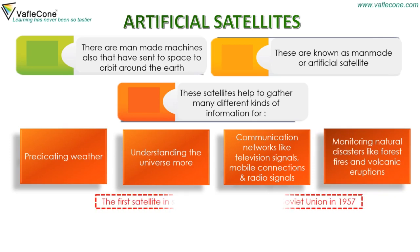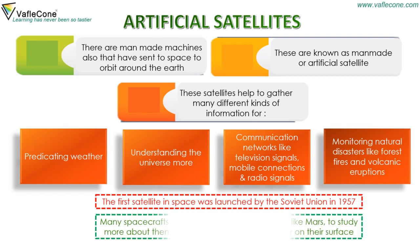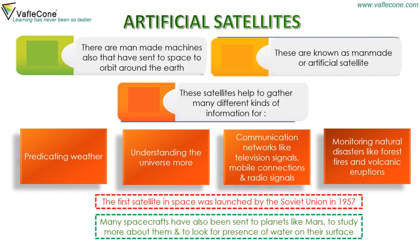The first satellite in space was launched by the Soviet Union in 1957. Many spacecrafts have also been sent to planets like Mars to study more about them and to look for the presence of water on their surface.